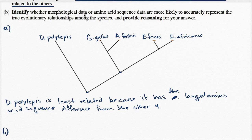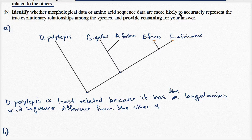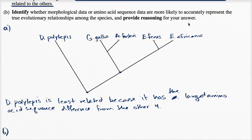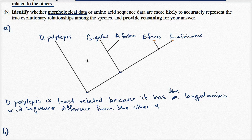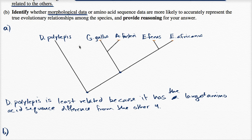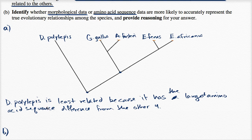Identify whether morphological data or amino acid sequence data are more likely to accurately represent the true evolutionary relationships among the species and provide reasoning for your answer. So, morphological data, this is looking at the morphology of the different species. And you could say, what's the shape of their backbone or their different bones or the shape of different parts of their body?